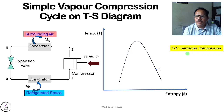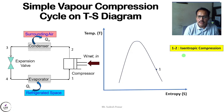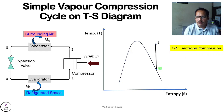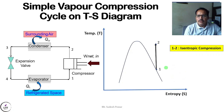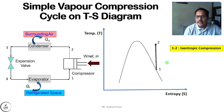In the isentropic compression process, entropy remains constant and there is no heat exchange. On the TS diagram this is shown by a vertical line, since vertical lines represent constant entropy. So process 1 to 2 — isentropic compression in the compressor — is a vertical line, and S1 is equal to S2.